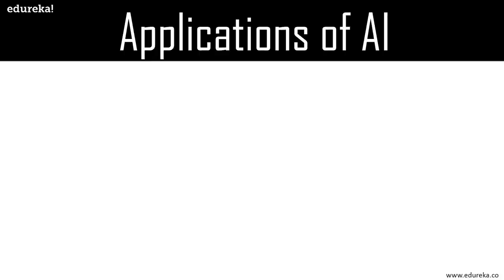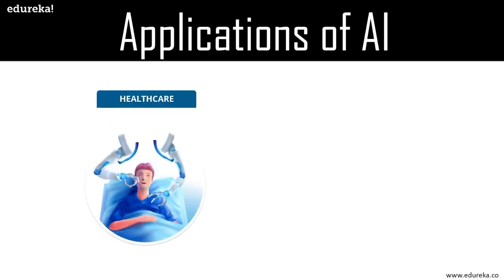Robots today are machine-learning-enabled tools that provide doctors with extended precision and control. These machines enable shortening the patient's hospital stay, positively affecting the surgical experience and reducing medical costs all at once. Similarly, mind-controlled robotic arms and brain chip implants have begun helping paralyzed patients regain mobility and the sensation of touch. Overall, machine learning and artificial intelligence are helping improve the patient's experience on the whole.